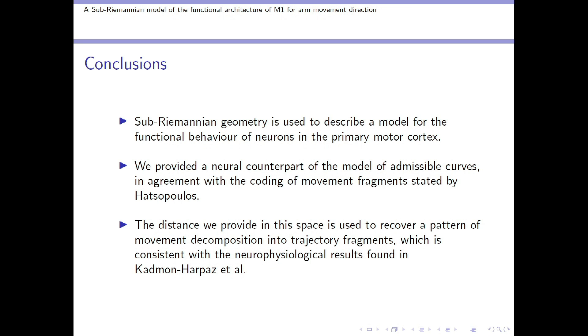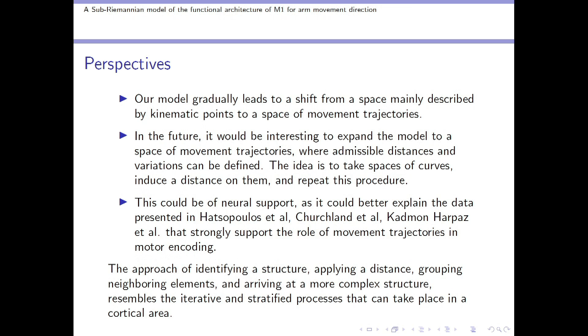To resume, we use the sub-Riemannian geometry to describe a first model for the behavior of neurons in M1, and the distance we have provided is used to recover a pattern of movement decomposition which is consistent with neural findings. Just to give a hint for some perspectives, this type of model seems to gradually lead to a shift from a space mainly described by points, kinematic points, to a space of curves, movement trajectories.